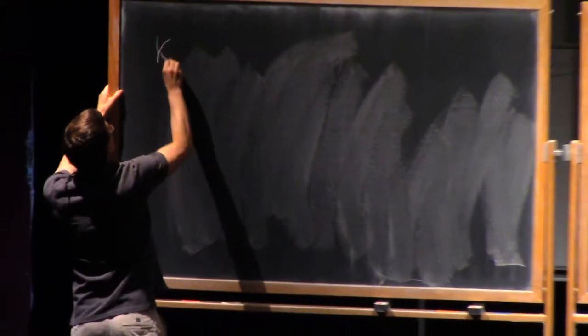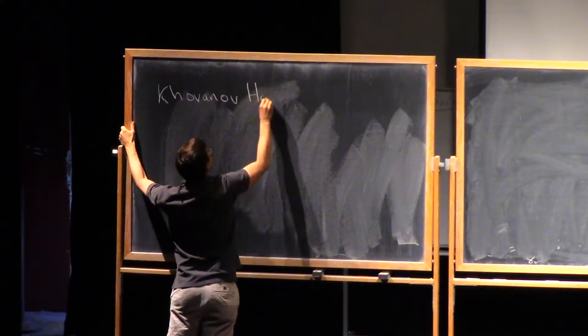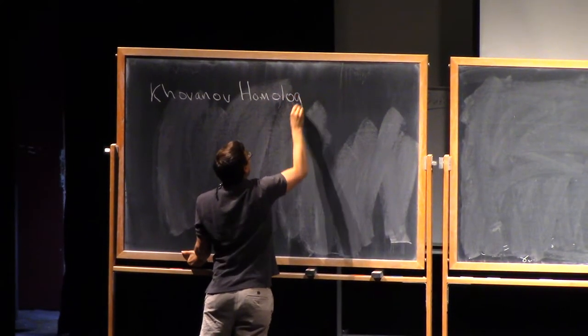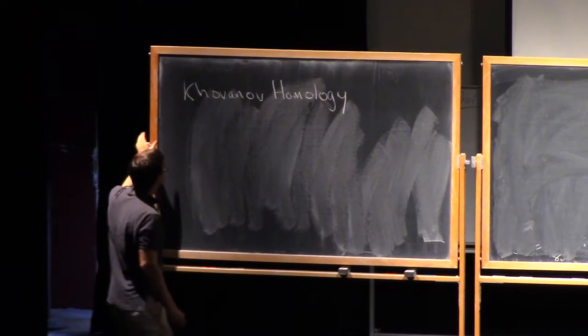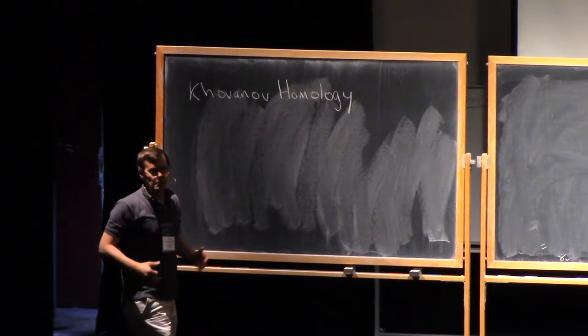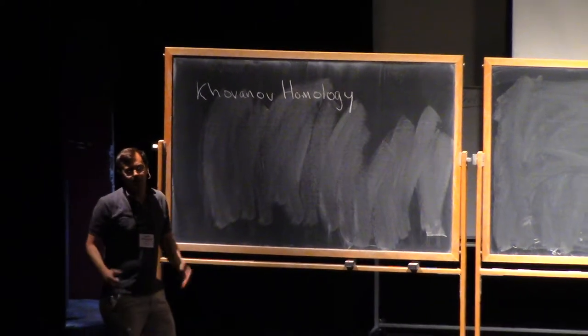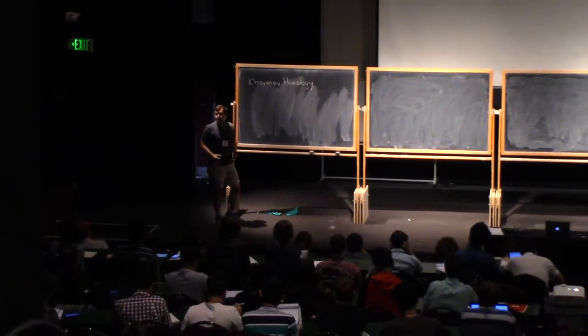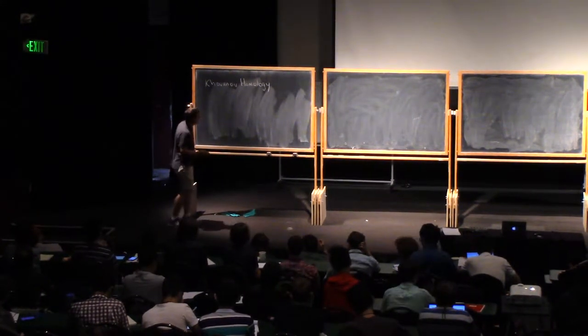I'm going to talk about an invariant of oriented knots and links called Khovanov homology. Before I start, let me mention that for the first 40 minutes or so, probably more like the first 50, this is going to seem like it has very little to do with the things I talked about in the first lecture. But we'll make some contact with ideas at the end of the first lecture at the end of this one.